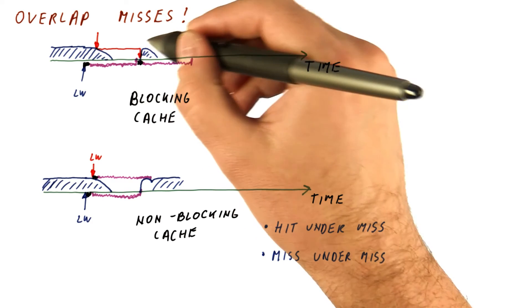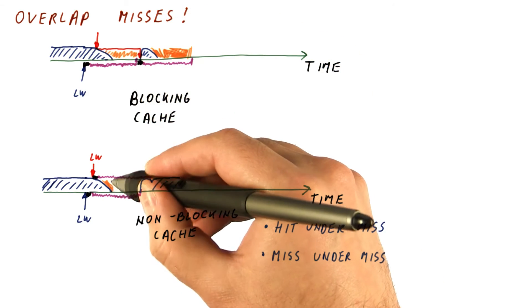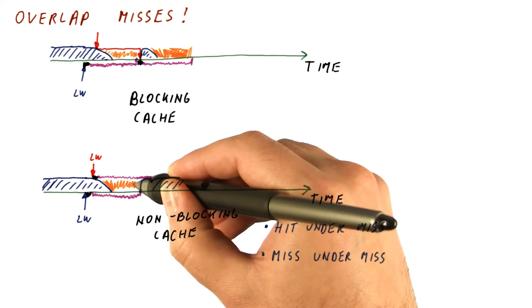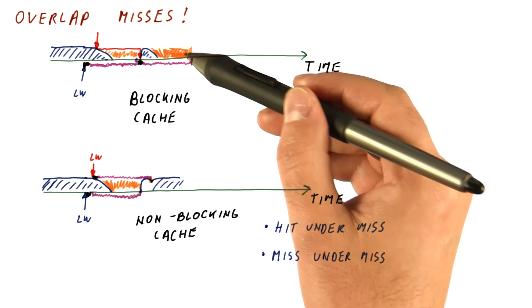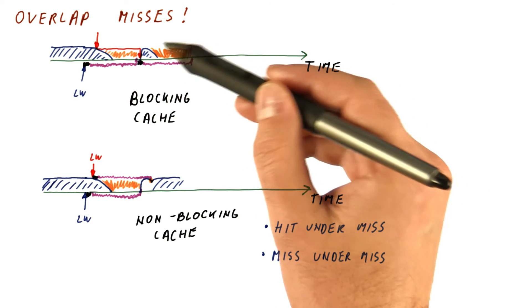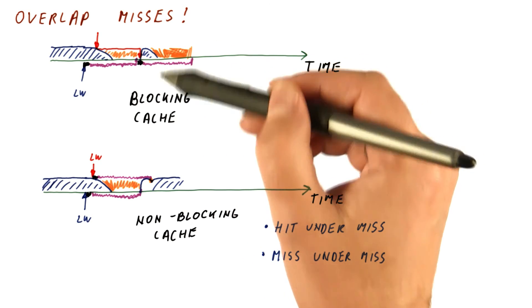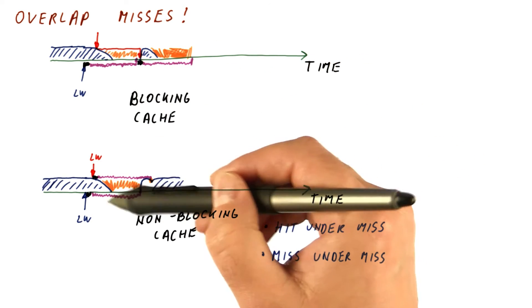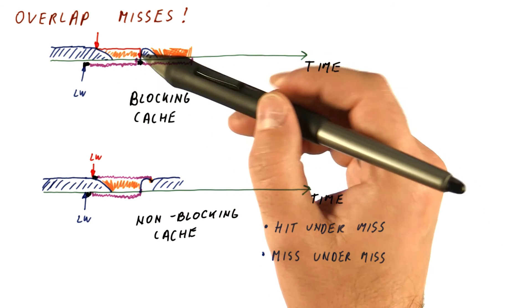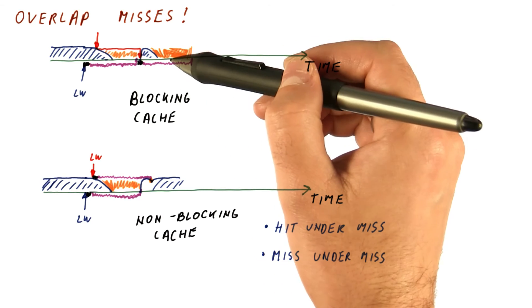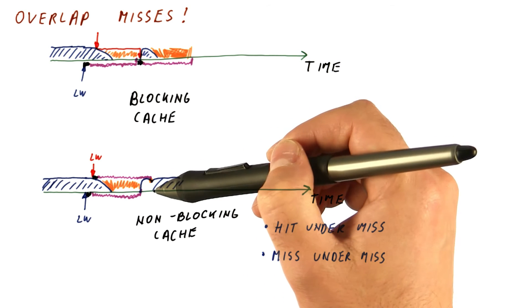So now as you can see, the inactivity in the processor used to be this and this. And now it's just this and maybe a small amount here. So by overlapping the miss time of the two loads, we have almost cut the penalty on performance to half of what it was. Because before we had to wait twice this. Now we really wait once and maybe some little more. If we manage to find three or four loads that overlap, then with a blocking cache we would pay the penalty three or four times. Here we might be paying one penalty plus a little bit more.